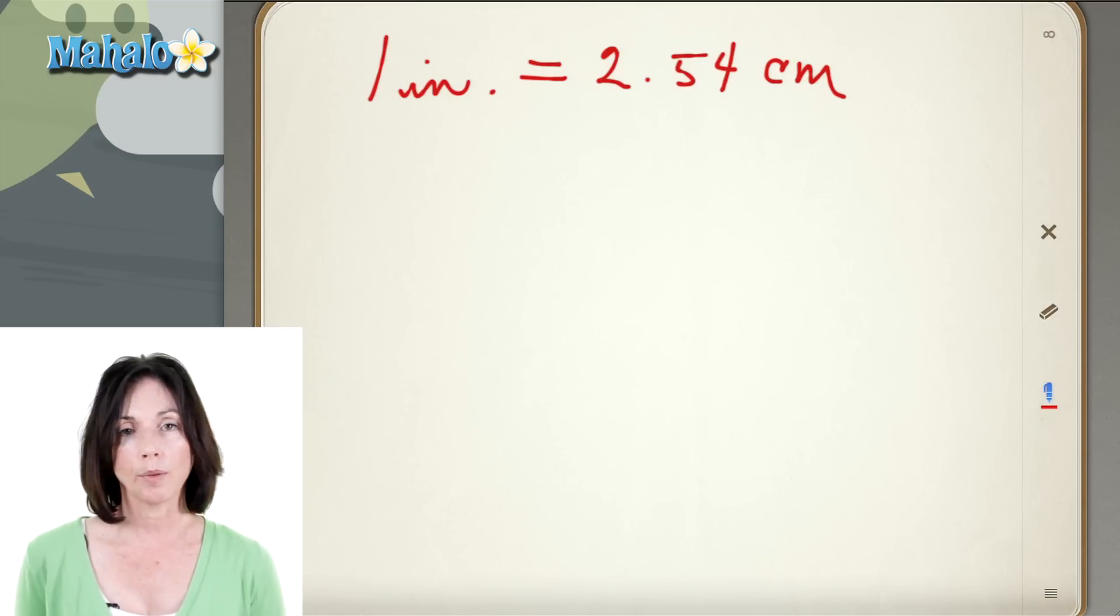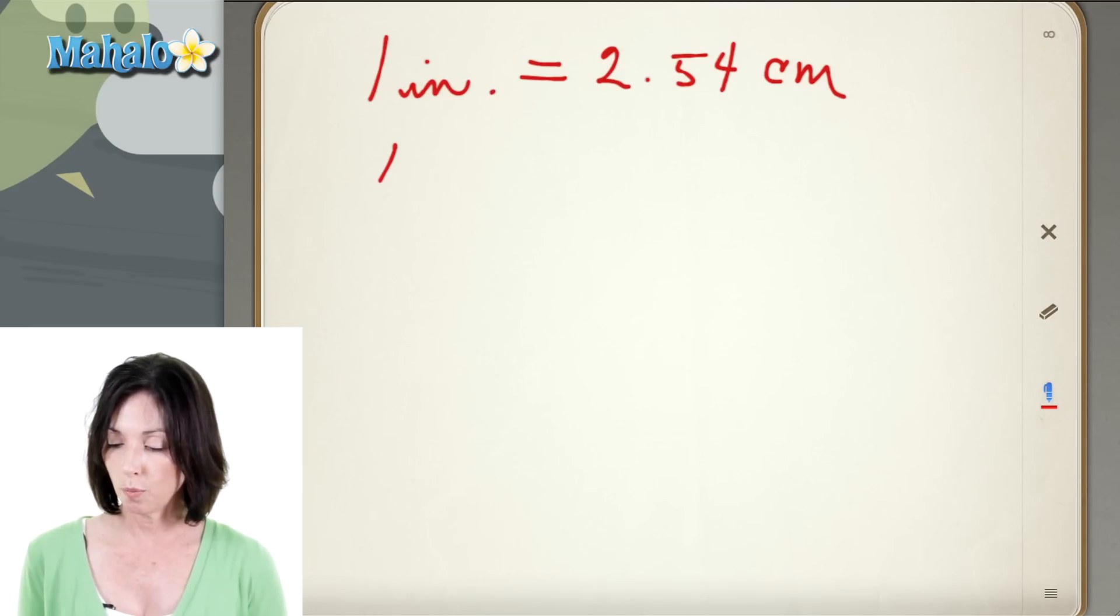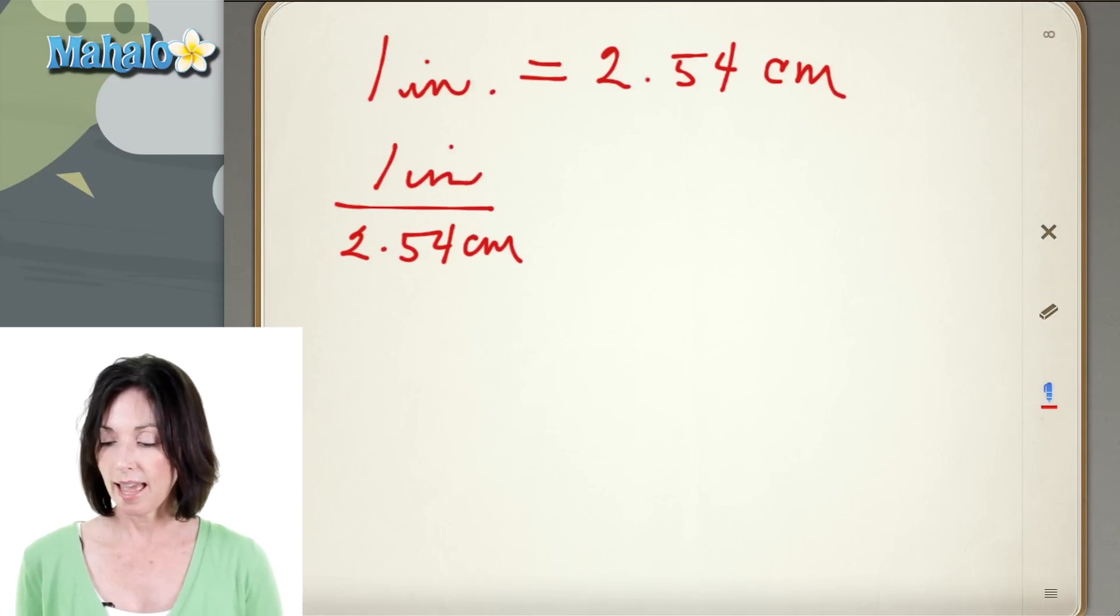So let's say I want to convert 2 inches into centimeters. Well on one side of the equation I'm going to have my conversion factor. So for every 1 inch I have 2.54 centimeters. And then on the other side I'm going to have the thing I want to convert which is my 2 inches.